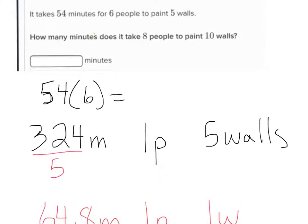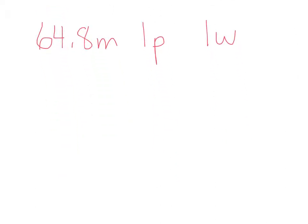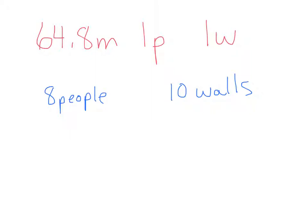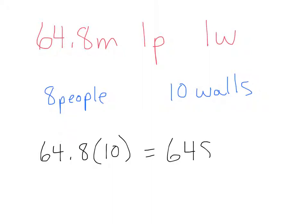That's important because it helps us answer the second part: how many minutes does it take for 8 people to do 10 walls? It takes 64.8 minutes for 1 person to paint 1 wall. For 10 walls, multiply 64.8 by 10 to get 648 minutes. But then you hire 8 people, so divide 648 by 8, giving you 81 minutes.